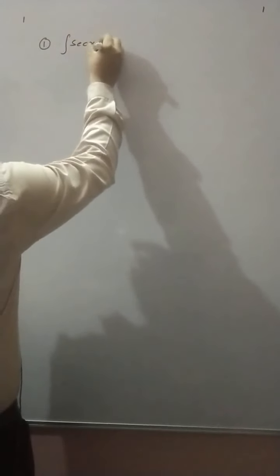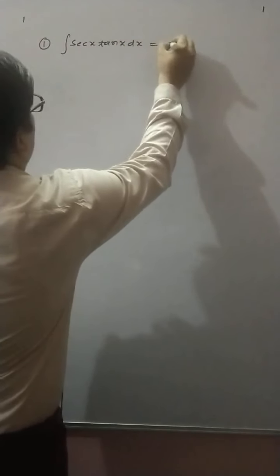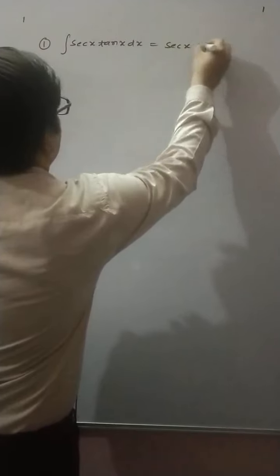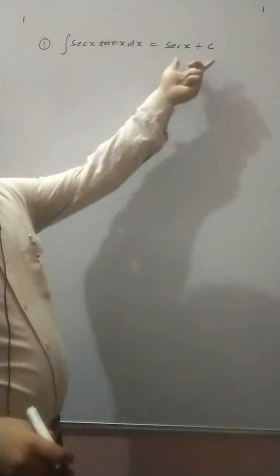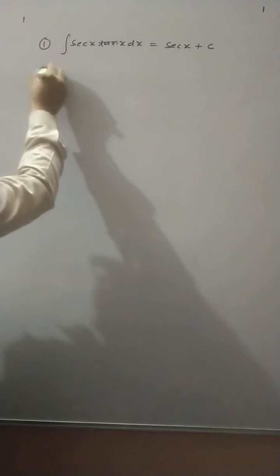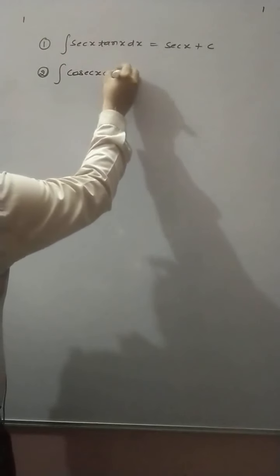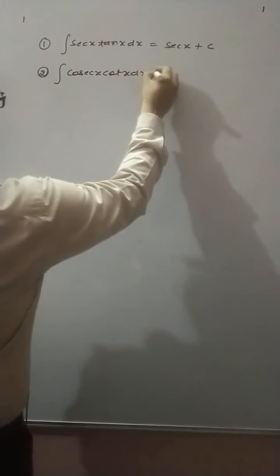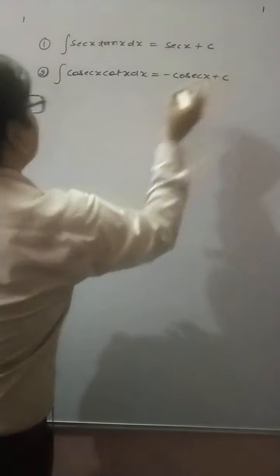First one is: integration of secant x tangent x dx is equal to secant x plus C. It means the derivative of secant x plus C equals this. Next one is: integration of cosecant x cotangent x dx is equal to minus cosecant x plus C.